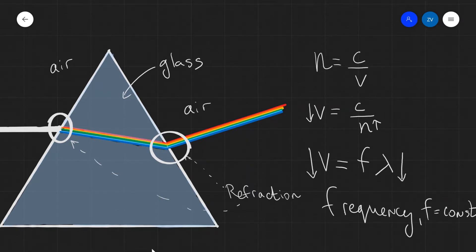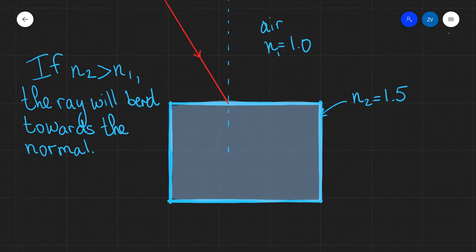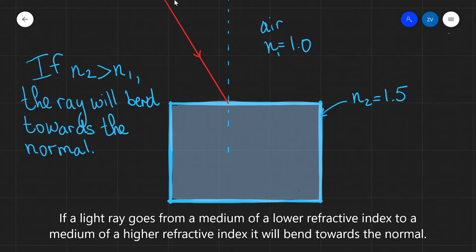Now how do we know how much will each individual ray actually bend when it passes from one medium to the other? Let's have a look at the law of refraction, also known as Snell's law. The rule that will enable us to draw the trajectory of this light ray is as follows. If a light ray goes from a medium of a lower refractive index to a medium of a higher refractive index, the ray will bend towards the normal.